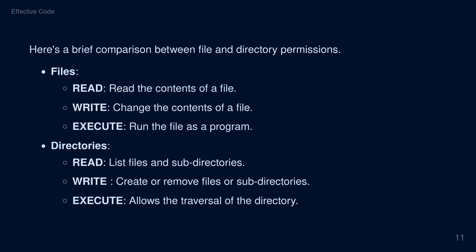Here's a brief comparison between file and directory permissions. For files: read permissions reads the contents of a file; write permissions change the contents of the file; and execute permissions runs the file as a program. For directories: read permissions lists the files and sub-directories; write permissions creates or removes files and sub-directories; and execute permissions allows the traversal of the directory.